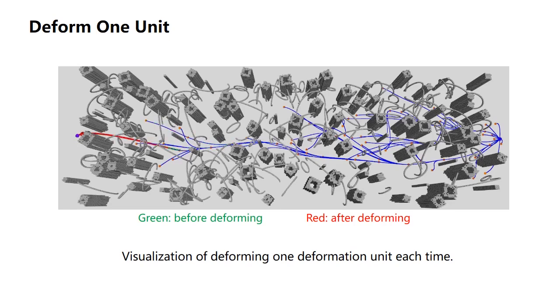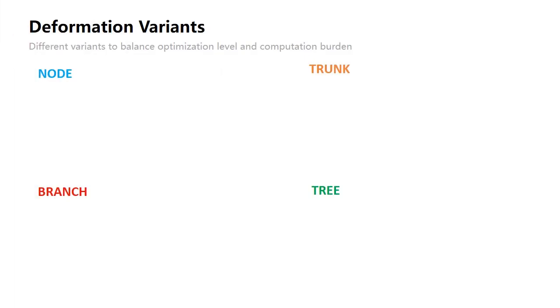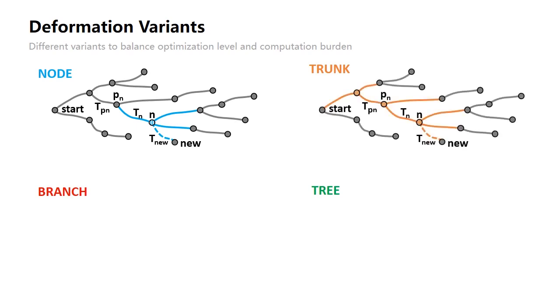To compare and balance different optimization levels and computation burden, we propose four kinds of variants of deformation: node, trunk, branch, and tree. Node means optimizing only one deformation unit, which contains node N and the edges connecting it. Trunk optimizes several deformation units, and the units are selected by following parent pointers from node N up to a child node of node start.